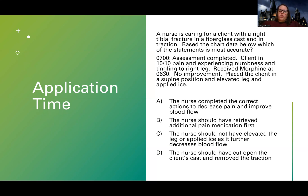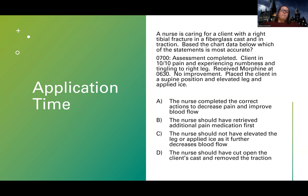Looking at the answer choices: A says the nurse completed correct actions to decrease pain and improve blood flow - but if someone's showing signs of poor perfusion with numbness and tingling, elevating the leg makes it worse, and applying ice causes vasoconstriction, making it worse too. B says the nurse should have retrieved additional pain medicine first - but the patient is showing signs of a circulation issue. C says the nurse should not have elevated the leg or applied ice as it further decreases blood flow. A and C are opposites, and one of them is correct. D says to cut the cast and remove traction - logistically that sounds right, but I need a doctor's order first. The answer is C.